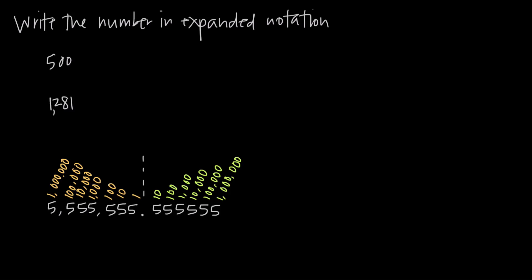In this video we're talking about place value and expanded notation. We've been asked to use expanded notation to rewrite 500 and to rewrite 1,281. But first I want to talk about place value. I've written a number here: 5,555,555.555, and this is just to illustrate the value of each place in this number. So this is what we call place value.